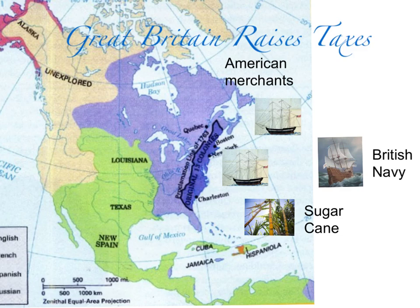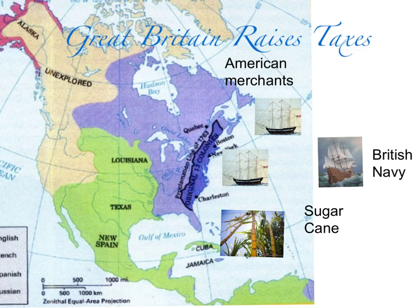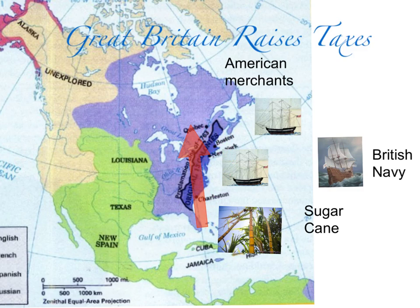As we zoom in on our map, we can see sugarcane, which was grown down in the Caribbean area. The sugarcane was used to produce things like molasses and pure sugar. Anytime the colonists imported sugar — when it went from the Caribbean up into the colonies — they had to pay a tax on that.